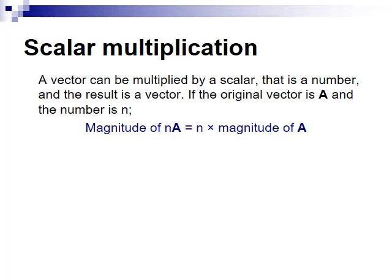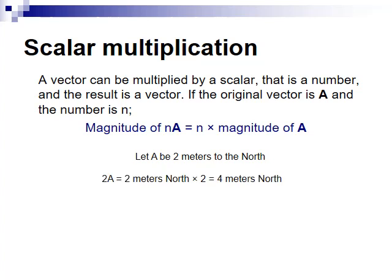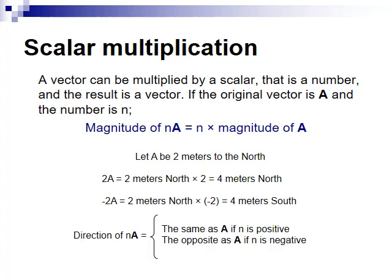A vector can be multiplied by a scalar, that's a number, and the result is a vector. Let's view this example. Let a be 2 meters to the north and let's multiply a with 2. 2 times a is 2 meters to the north times 2 makes 4 meters to the north. What if I multiply a with a negative number like negative 2? Negative 2a, however, is 4 meters to the south instead of north. This means if we multiply a vector with a negative number, then the direction will reverse.